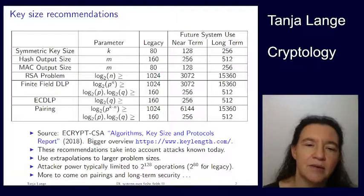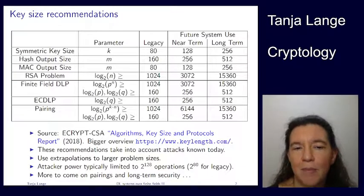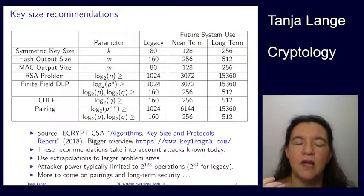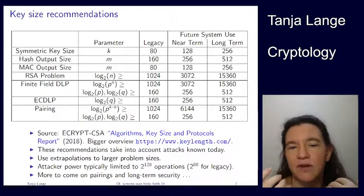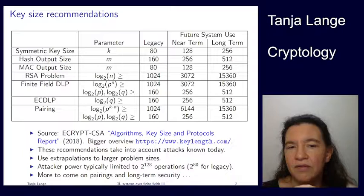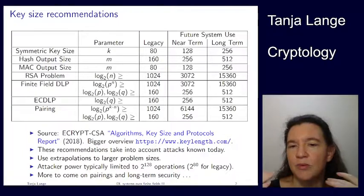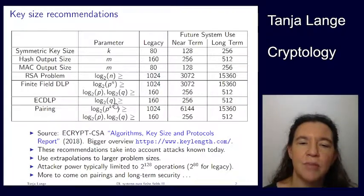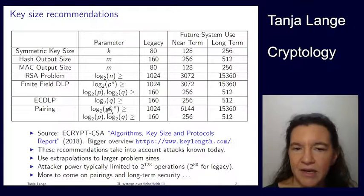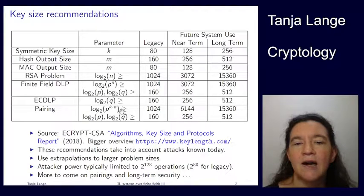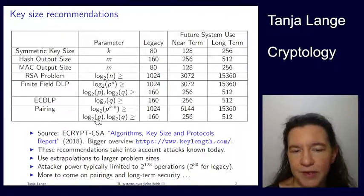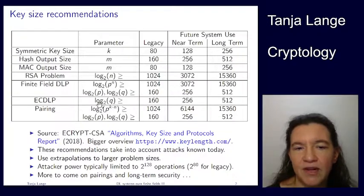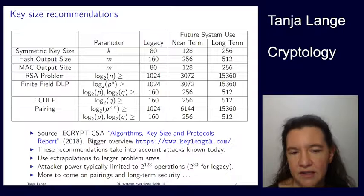There's another row called pairings, which I'll get to in the next unit when we talk about more advanced systems. A pairing is a map between elliptic curves and finite fields, so you have to satisfy all the criteria. You're working in a subgroup, so the security is like the ECDLP or the finite field security for Q — the subgroup has to be at least 256 bits. But then you're working in some finite field, and there's an extra parameter K, the embedding degree, that comes in with pairings. This finite field is again a target for index calculus attacks.